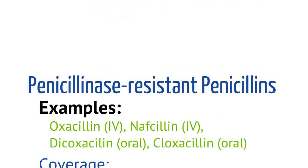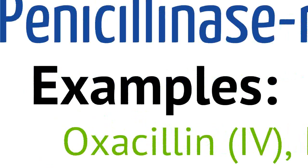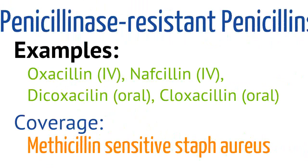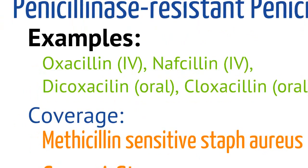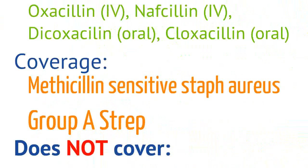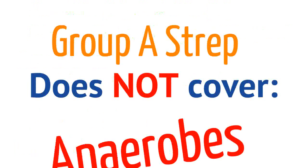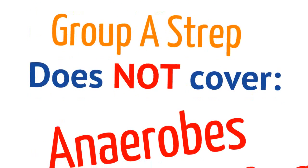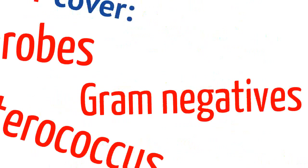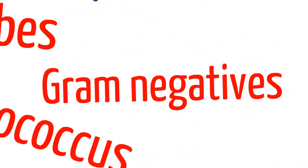Let's talk about penicillinase-resistant penicillins. Examples include oxacillin, which is IV, nafcillin, dicloxacillin, and cloxacillin. The coverage is generally methicillin-sensitive Staphylococcus aureus as well as group A streptococcus. Keep in mind these penicillins do not cover anaerobes, gram-negatives, or enterococcus.